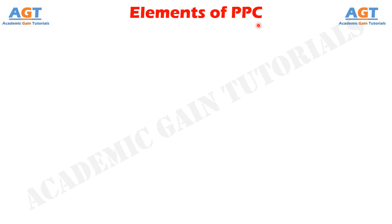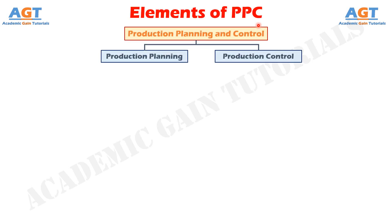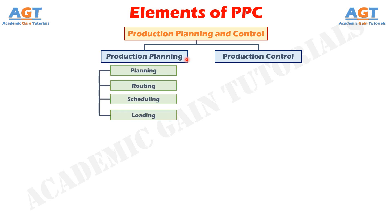It is important to note that the production plan is the first and foremost element of production planning and control. Planning refers to deciding in advance what is to be done in future. A separate planning department is established in the organization which is responsible for the preparation of policies and plans with